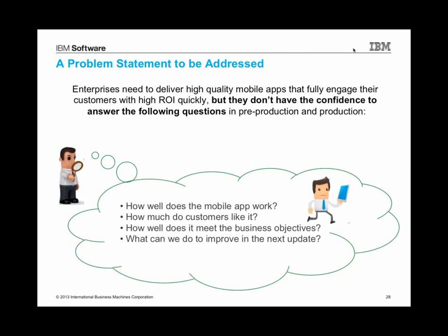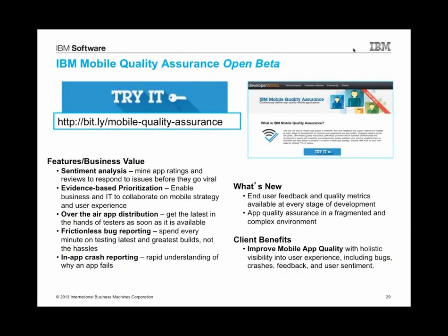A lot of people really want to develop and deliver high-quality mobile applications, but they don't have the confidence to answer some really basic questions. Number one: how well does the mobile app work? Do customers like it? Does it meet expectations? And what can we do quickly to improve in the next update? These are really hard questions to answer if you don't have a way of getting really good feedback early and often from the process. So let's talk about this brand-new product — IBM Mobile Quality Assurance. It's in open beta right now. If you follow the Bitly link, you can sign up and start trying this out. It's free, and we've got forum-based support. We really want your feedback because it could be a game-changer for you in getting feedback early and often for your mobile apps.